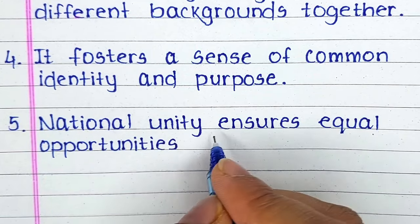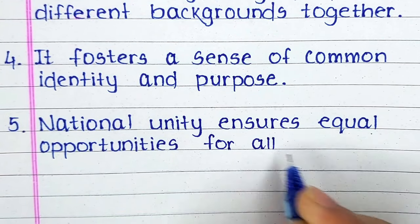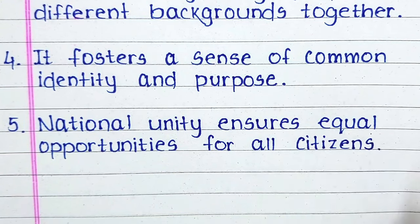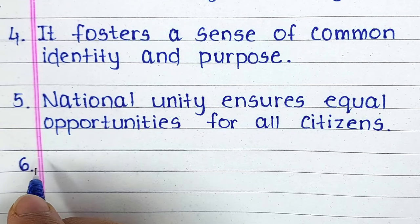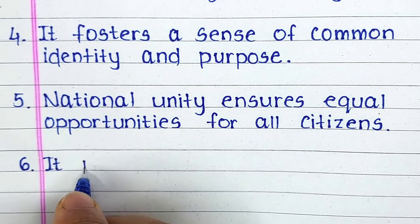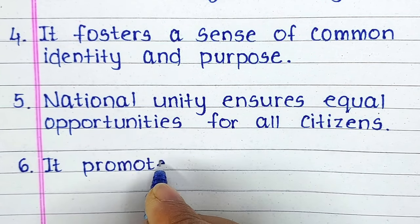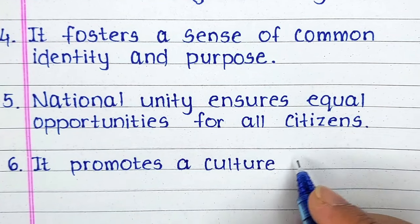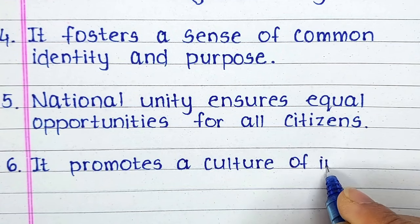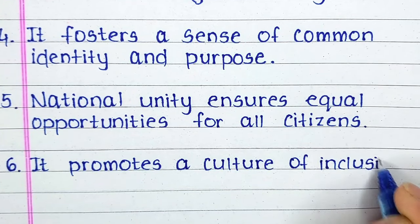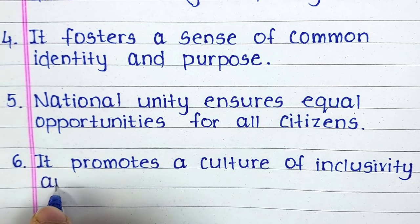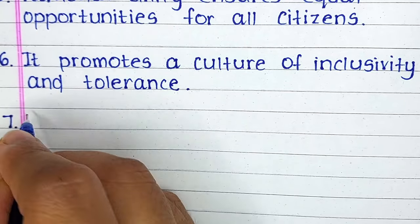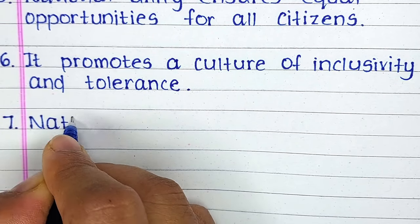Fifth line is: National unity ensures equal opportunity for all citizens. Sixth line is: It promotes cultural inclusivity and tolerance.